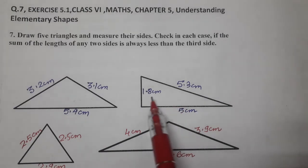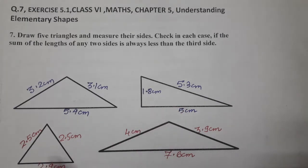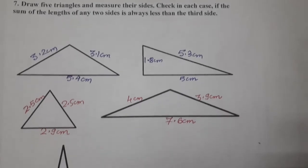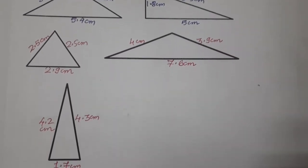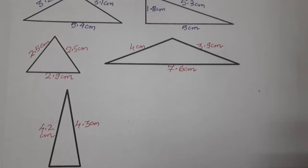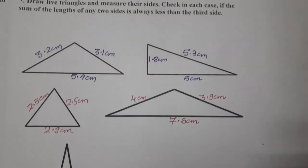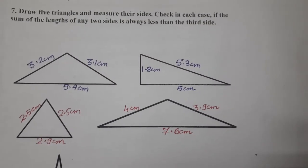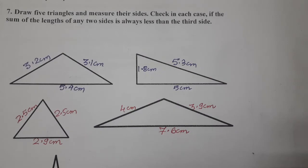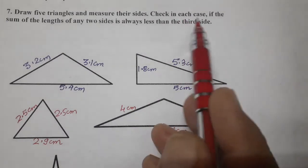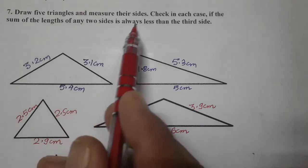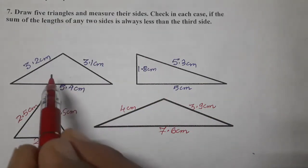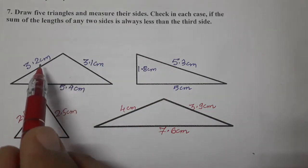I have measured all the sides of all five triangles. These are the measurements of all the sides. Now what we have to check is that the sum of the length of any two sides is less than the third side. Let's do the sum of any two sides.